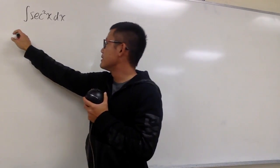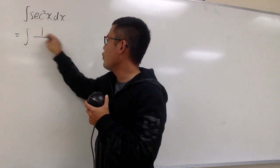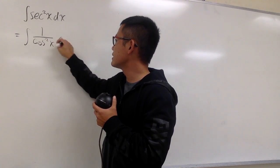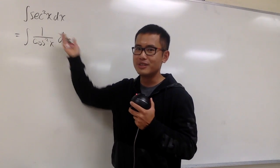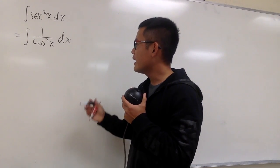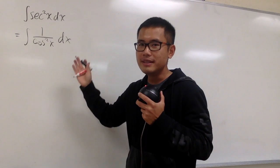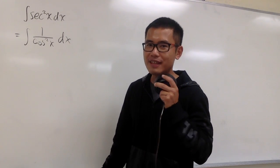The first step is, let's look at this as 1 over cosine squared x. That's a good strategy to deal with secant. Now, if you look at this integral, this is not that great, because we don't have a lot of things to work with.